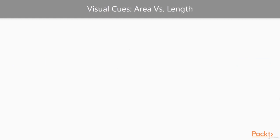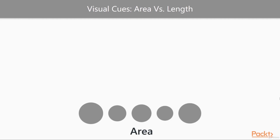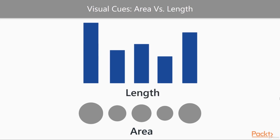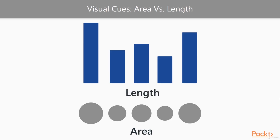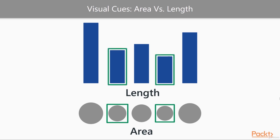Let's compare area versus length. Here's a set of values with varied sizes in their total areas from each other. Now, here are those same values, but as columns instead. Both sets of data are the same size in relation to each other, but notice how much easier it is to perceive differences with length versus area. From my perspective, the two areas appear almost the same size and it takes a second to notice their size differences. Those same values, when displayed as length, are much easier to notice the differences in size comparatively.